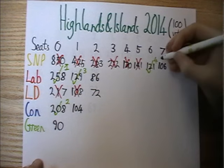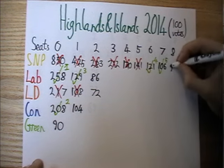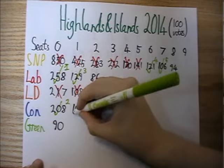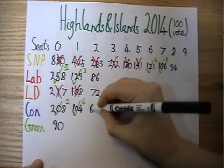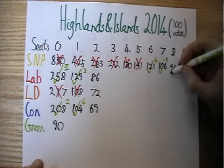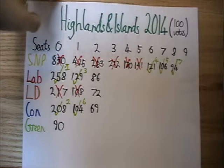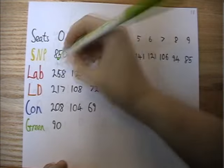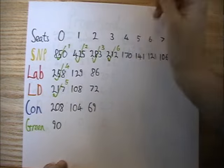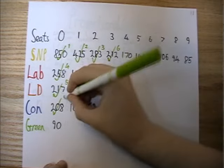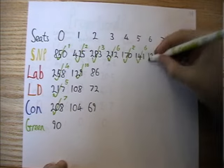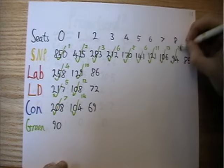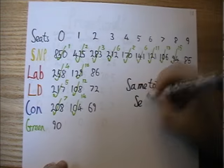The SNP win 3 of the last 4 seats to balance out Labour and the Conservatives winning the early seats. The Liberal Democrats don't win any of the list seats due to already having 2 constituencies. Looking deeper into the results, we can see that if we were to distribute all 15 seats using only the regional votes, we would actually get the same result, resulting in 9 SNP MSPs and 2 each for Labour, Lib Dems, and Conservatives.